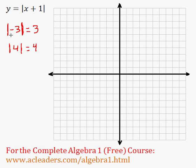But the absolute value of a negative number becomes positive. What about 0? The absolute value of 0 is just 0. So that's it: if we have a negative number inside the absolute value, it turns positive. If it's positive, it stays positive. If it's 0, it remains 0.